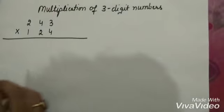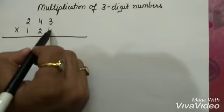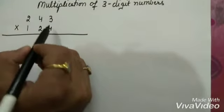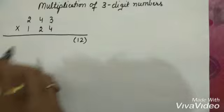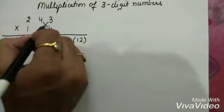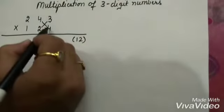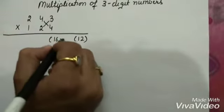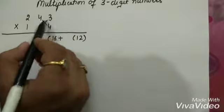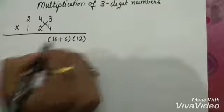First of all, what we need to do, this 4 and 3 to be multiplied together. 4 times 3 is 12. Then this cross is to be formed.